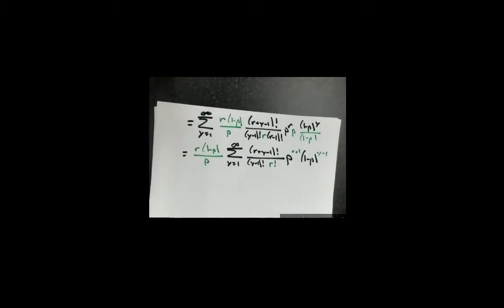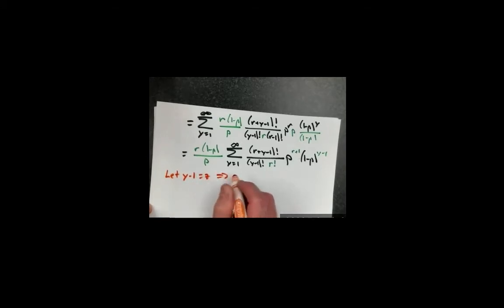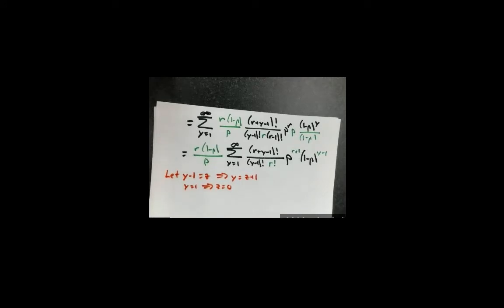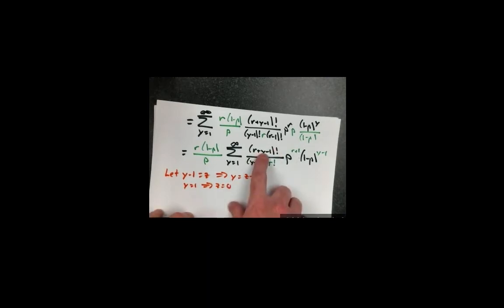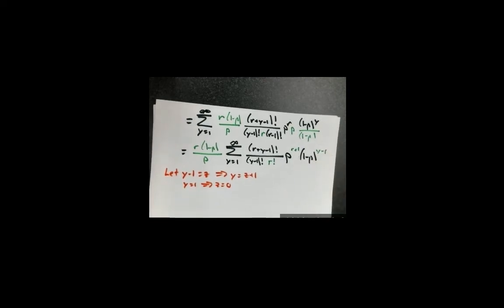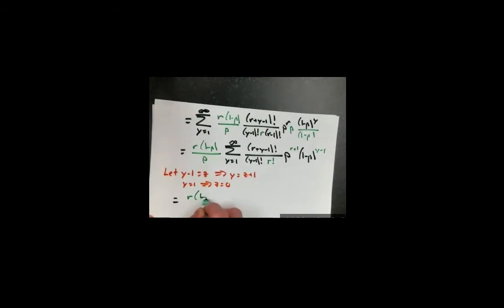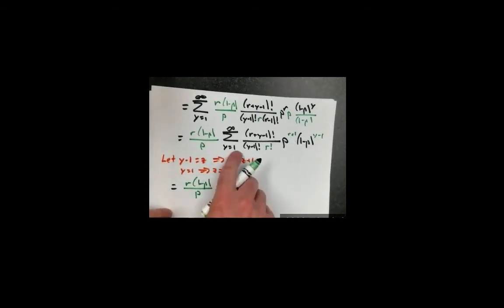At this stage, I'm going to do a change of variables. If I let z equal y minus 1, that implies y equals z plus 1. It also means if y equals 1, then z equals 0. Everywhere I see y I replace it with z plus 1, and everywhere I see y minus 1 I replace it with z. So instead of summing from y equals 1 to infinity, I'm now summing from z equals 0 to infinity.